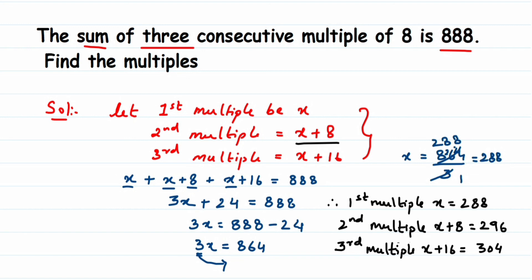So 288, 296, and 304 are the three consecutive multiples of 8. You can add them to verify — you will get 888, which confirms the answer is correct. I hope it's clear. If you have any questions or doubts, drop a comment below and I'll try to make a video on it. Thank you so much for watching.